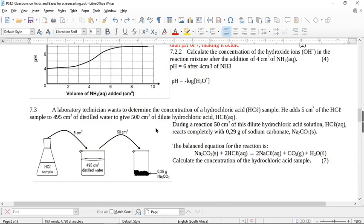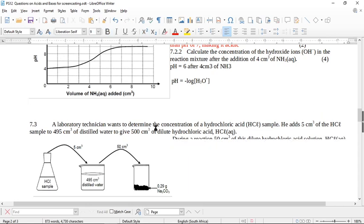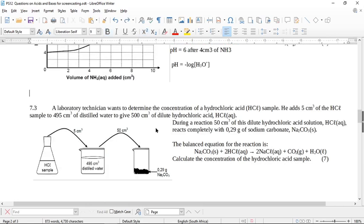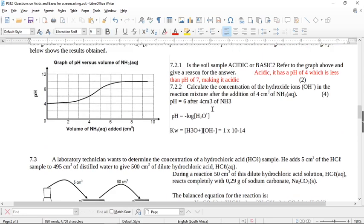But it actually asks you to calculate the concentration of hydroxide ions. So we're going to use this formula, but we're also going to end up using this formula because this is the formula that links the hydronium ion concentration to the hydroxide ion concentration. So distracting formatting issues aside, let's have a look at what's going on here. So we worked out that when we added 4 cubic centimeters of ammonia, the pH was 6.